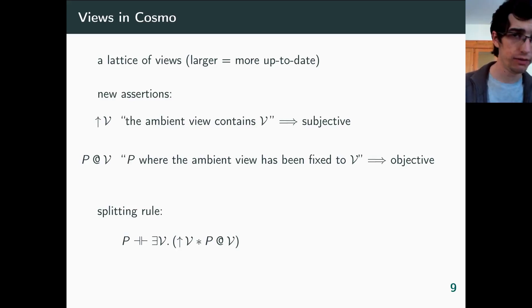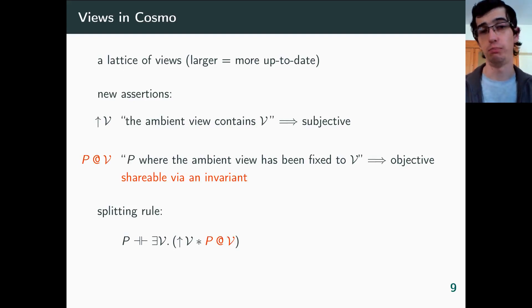This assertion satisfies several rules, in particular this one. Any assertion P can be decomposed into an assertion upper row V and an assertion P at V, for some view V, and conversely. That's how we can transfer P between threads. We isolate all of its subjective knowledge into a component upper row V, so that what's left is an objective assertion P at V, which we can share in an invariant. So to achieve a transfer of P, we just have to transfer view assertions. And this has a runtime meaning, this is synchronization.